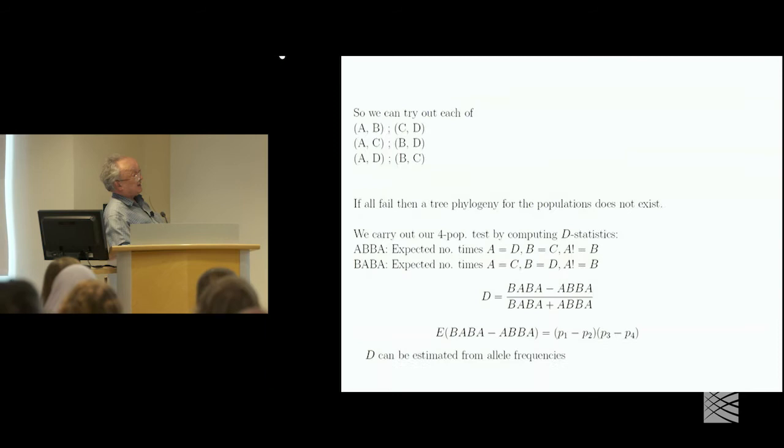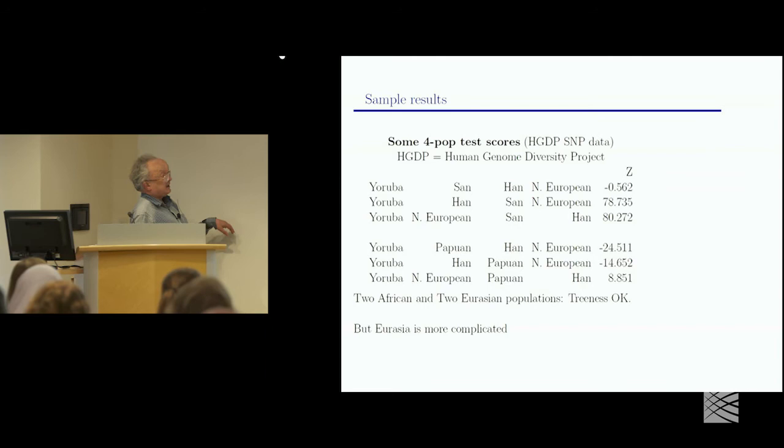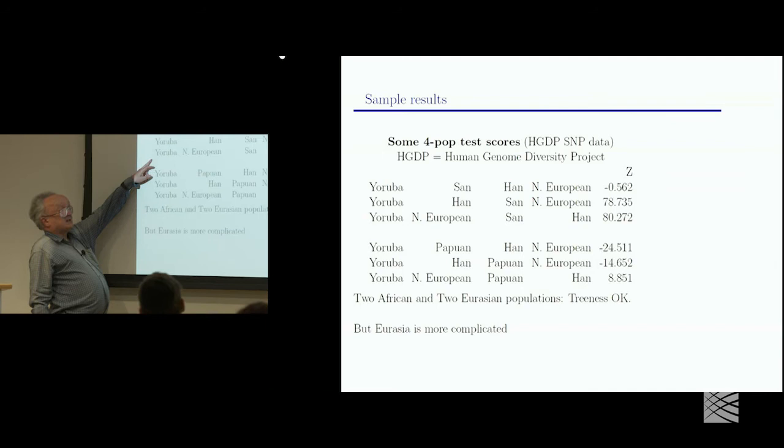So here's some examples. We take Yoruba Nigerians, which all of you will know about. Yeah? Can you motivate the D statistics a little more?